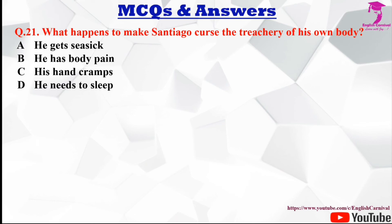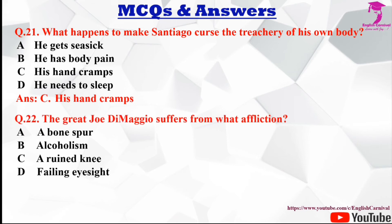Question number twenty-one: What happens to make Santiago curse the treachery of his own body? Options are A he gets seasick, B he has body pain, C his hand cramps, and D he needs to sleep. The correct answer is C, his hand cramps.